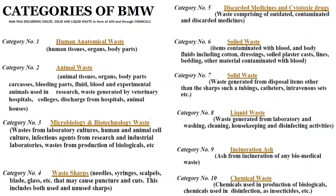A mnemonic to remember the categories: 'HAM WAS DISCARDING the soil, solid, and liquid waste in the form of ASH and through CHEMICALS.' H = Human, A = Animal, M = Microbiology and biotechnological waste. WAS = Waste sharps. DISCARDING = Discarded medicines. Then soiled, solid, and liquid for categories 6, 7, and 8. ASH = Incineration ash (category 9). CHEMICALS = Chemical waste (category 10).